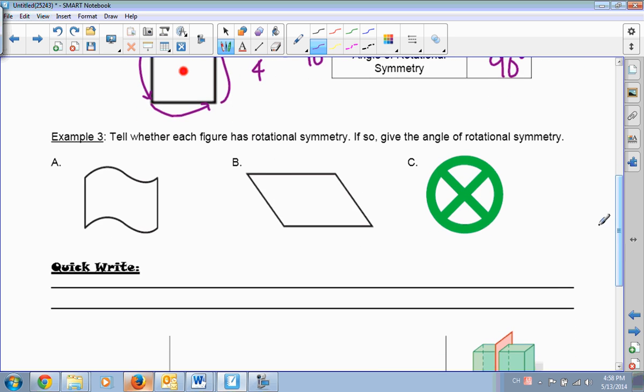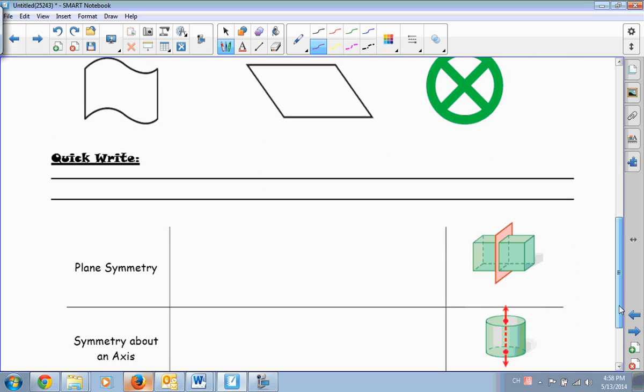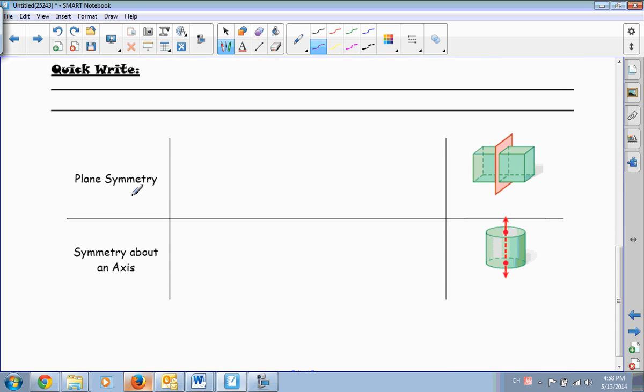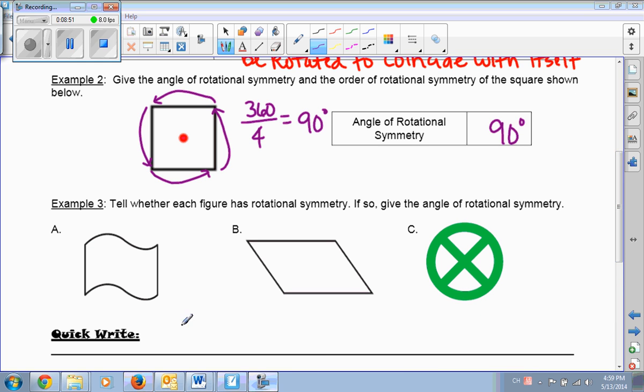We're going to talk more about the rotational symmetry in class tomorrow. So let's save example 3 for class. Also, we're going to save plane symmetry and symmetry about an axis for class as well. So we are done with notes, and I will see you tomorrow.